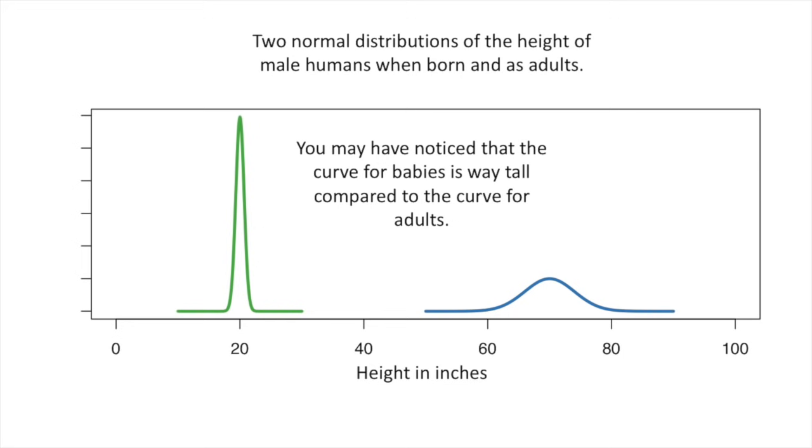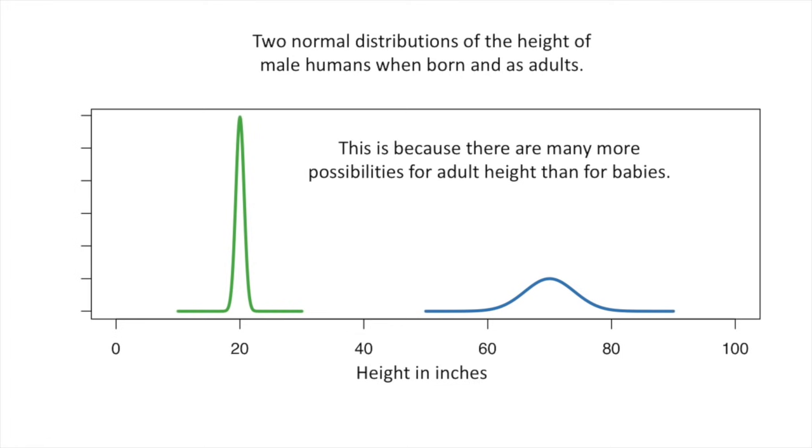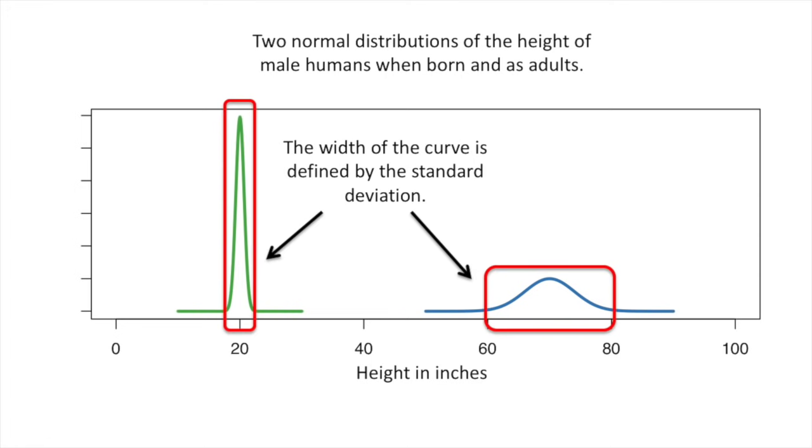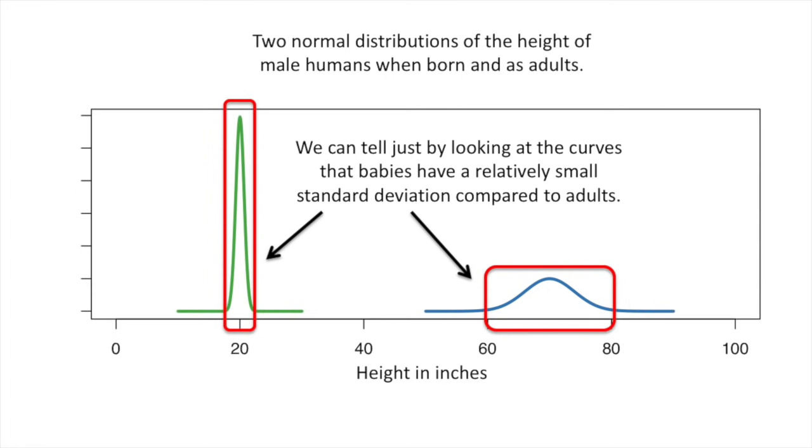You may have noticed that the curve for babies is way tall compared to the curve for adults. This is because there are many more possibilities for adult height than for babies. The more options there are for height, the less likely any specific measurement will be one of them.